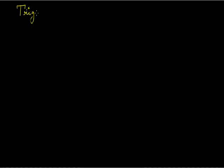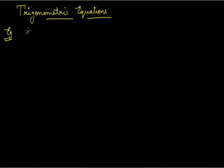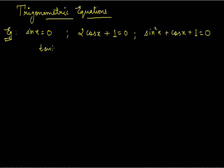Hi, this is Nana Joshi. Today we are going to study trigonometric equations. Trigonometric equations are basically equations involving trigonometric ratios of unknown angles. To solve a trigonometric equation, what we need to do is find the value of that unknown angle. For example, sin x equals to 0, or 2 cos x plus 1 equals to 0, or tan x equals to root 3. These are all examples of trigonometric equations, where the variable x is inside a trigonometric function.